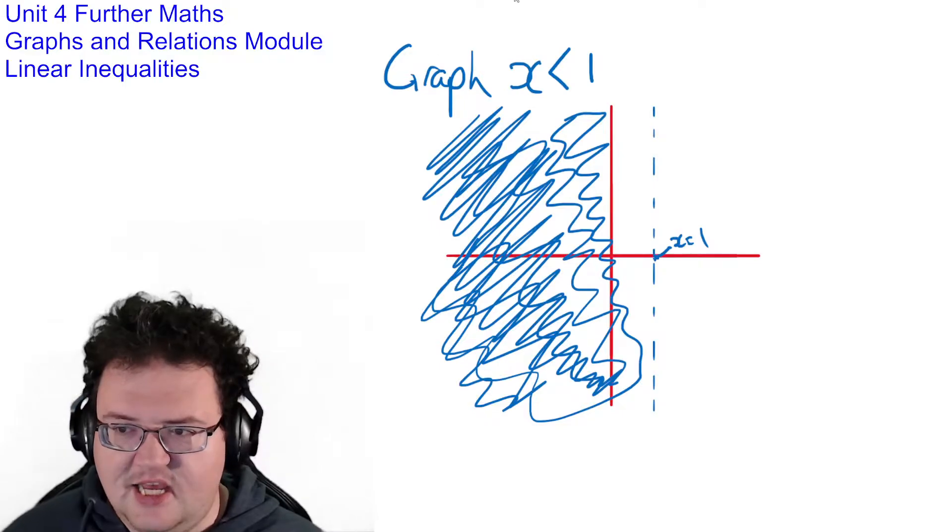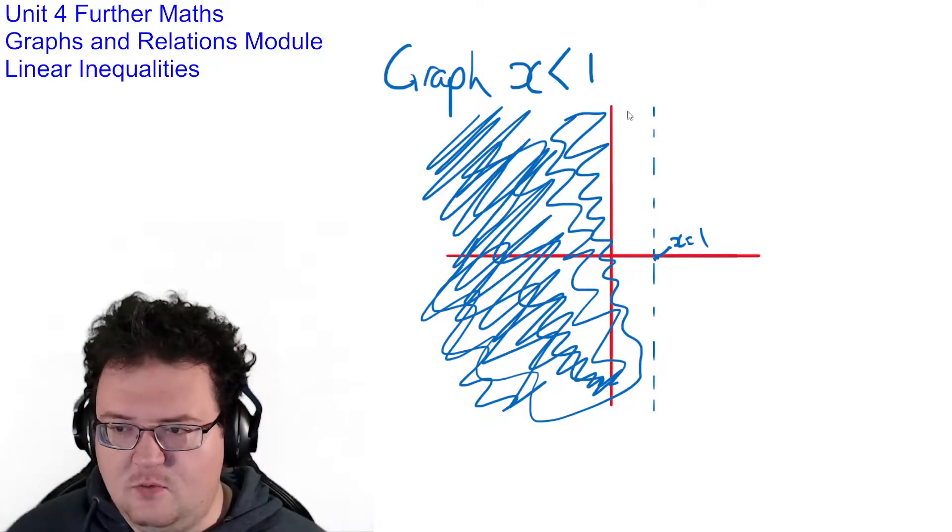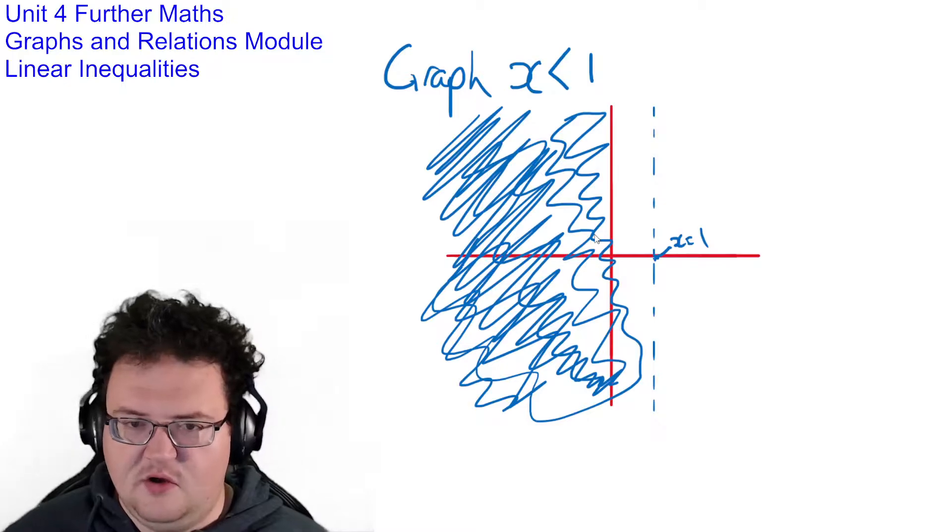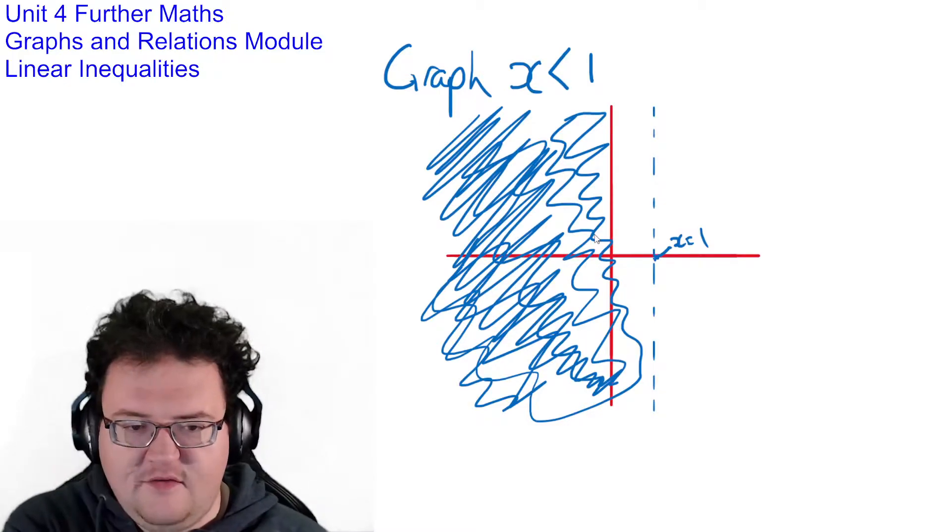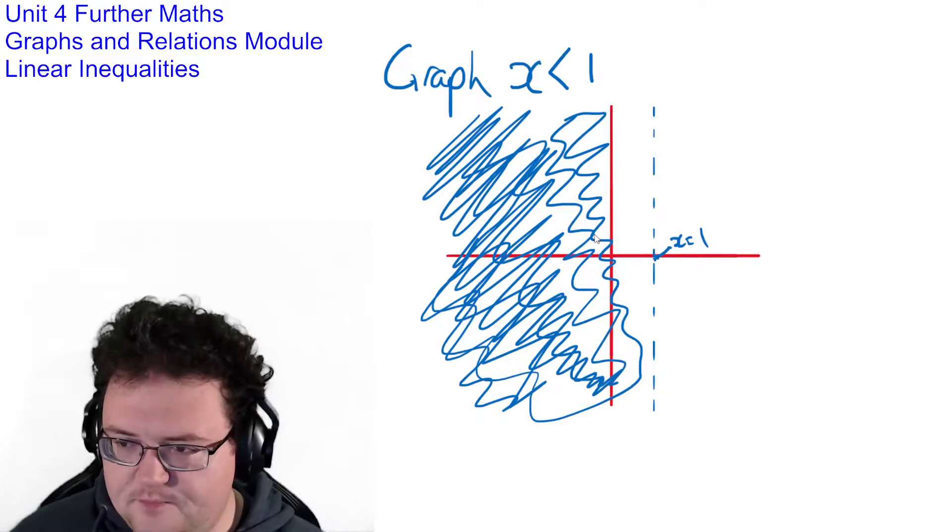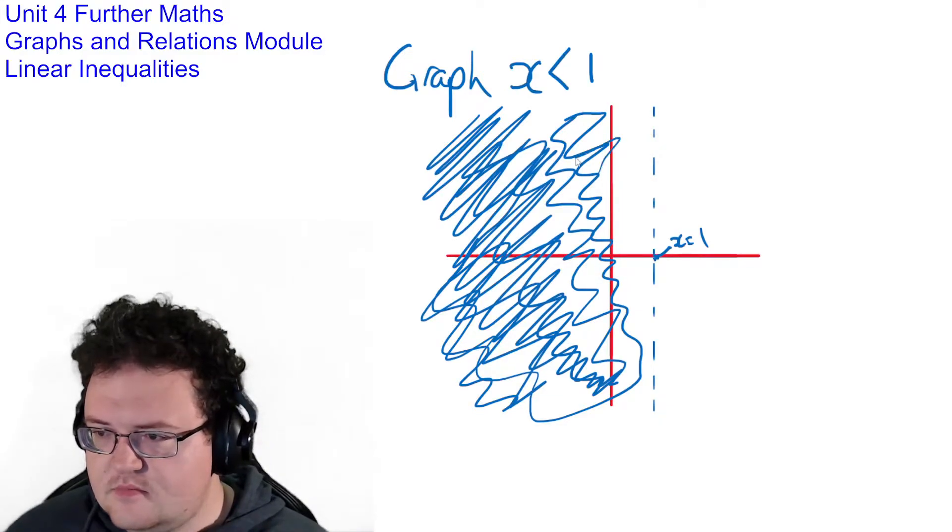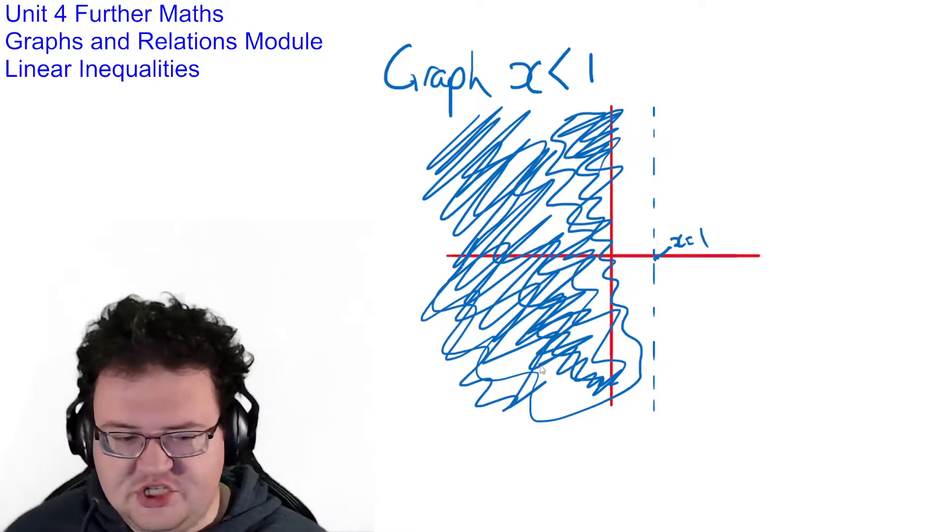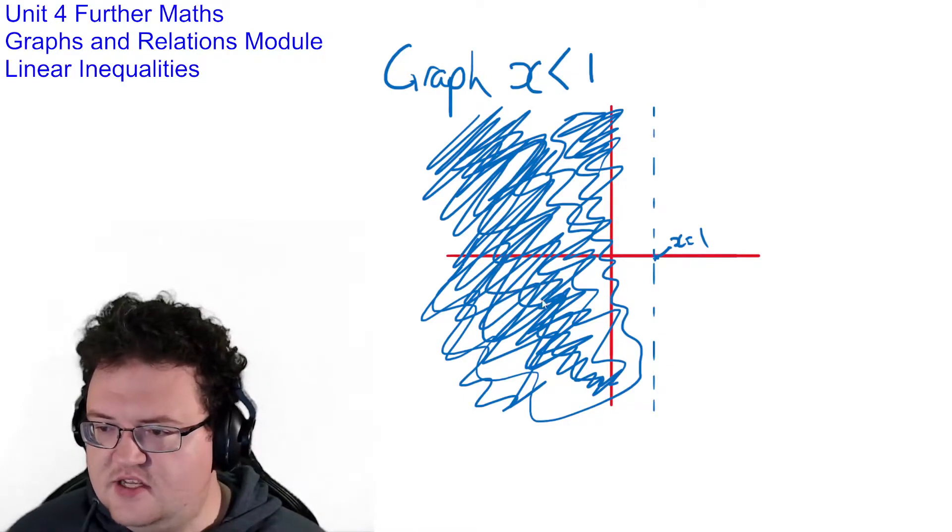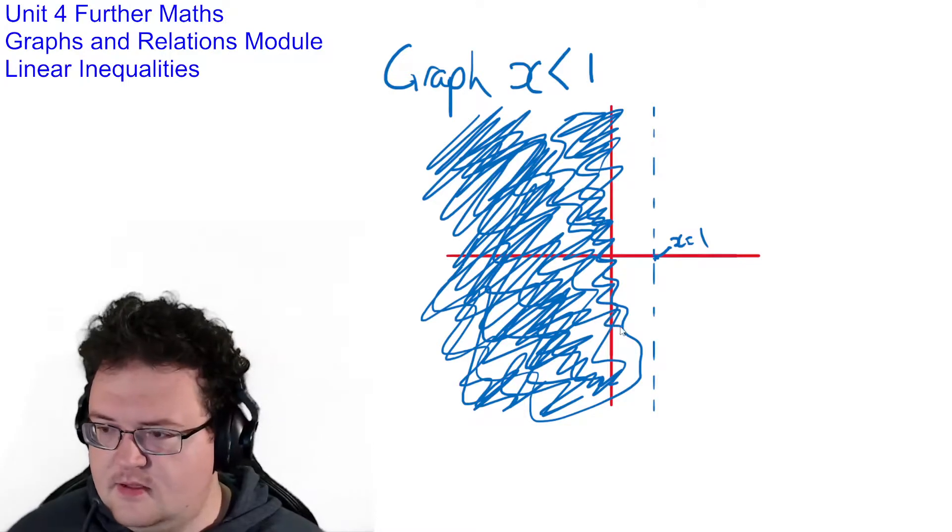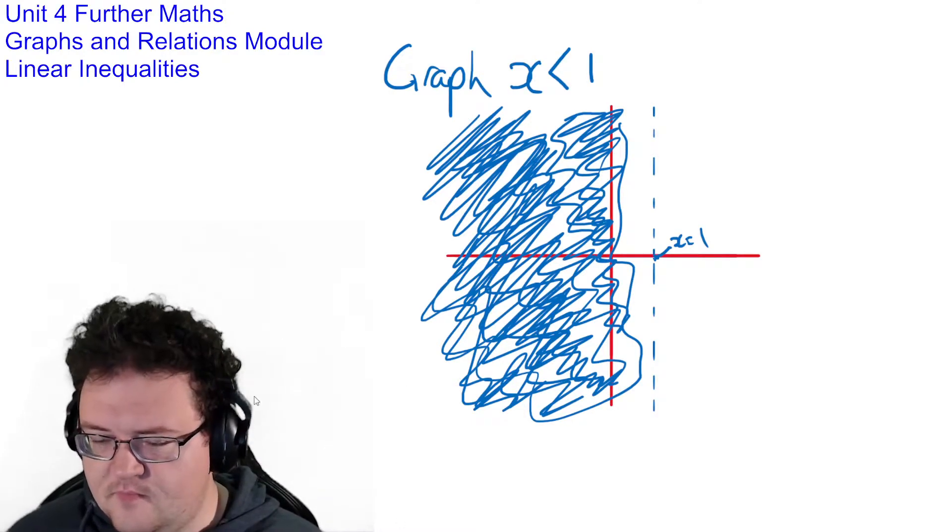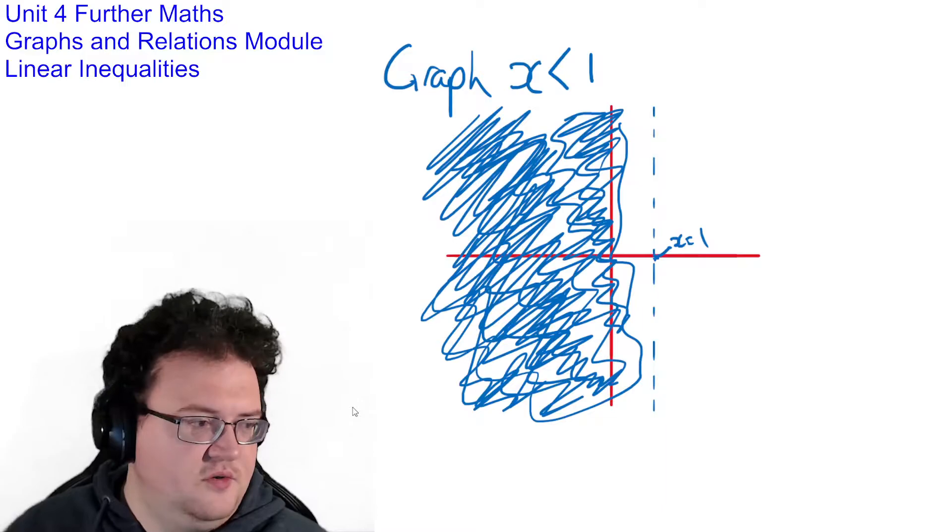So in this case here x is less than 1. So what values of x are less than 1? Well x is 0.5 and 0 and negative 0.5, negative 1, negative 2, negative 3. So we would shade this entire section in.